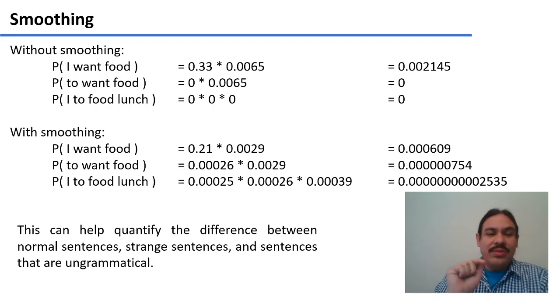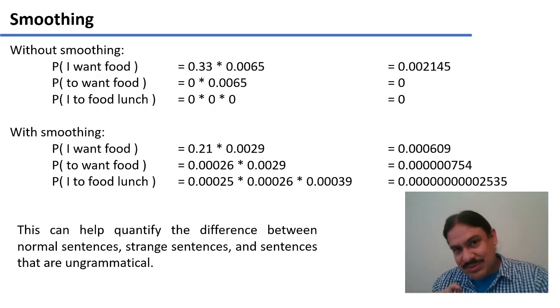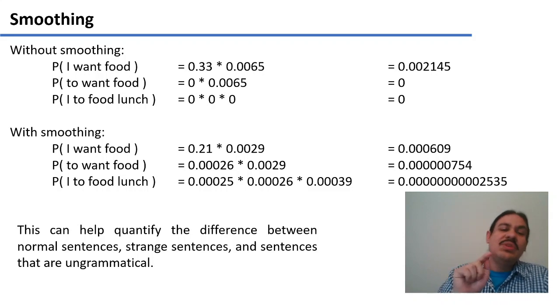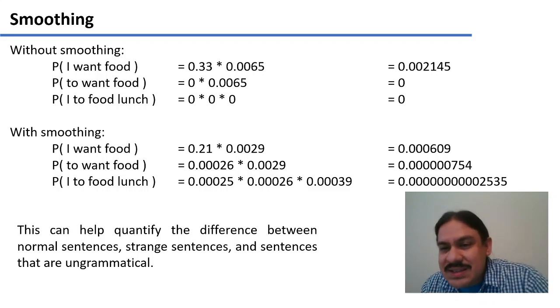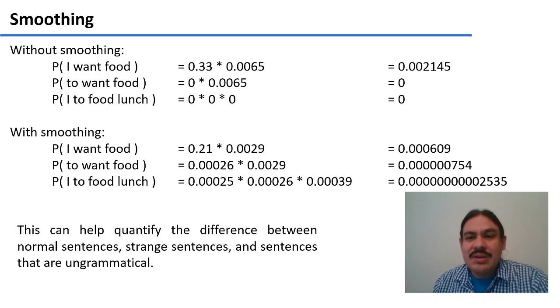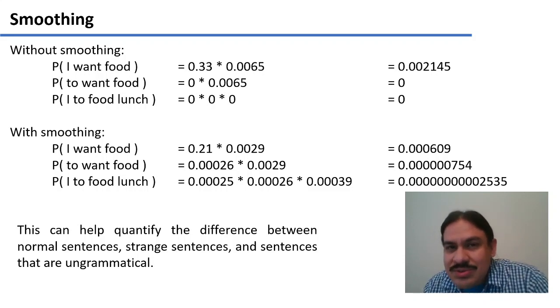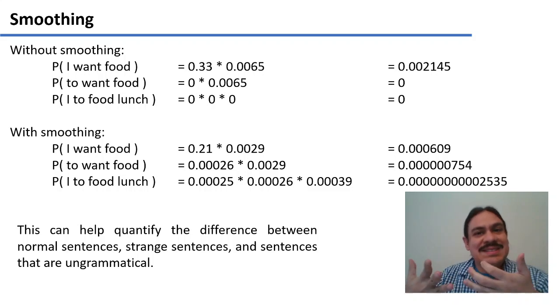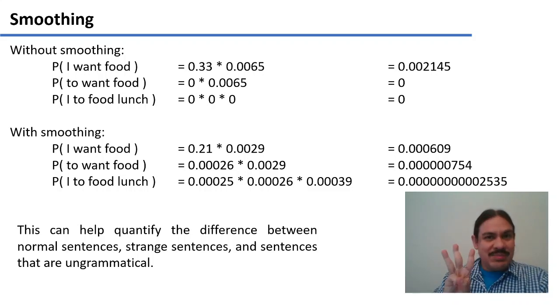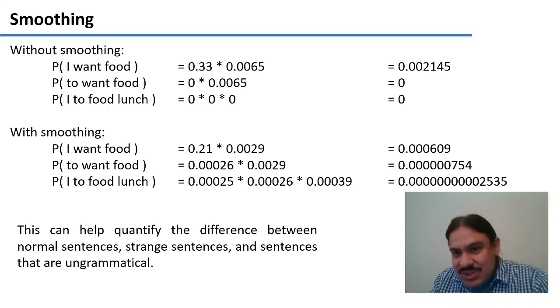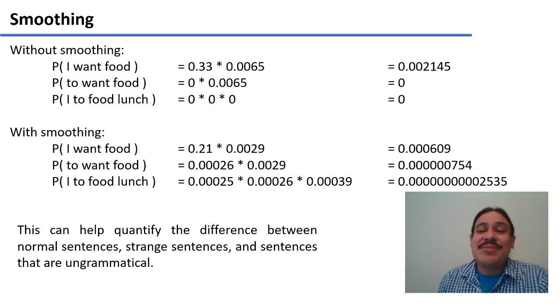So with the smooth probabilities, you have, I want food. It's 0.000609. You have to want food, which is the multiplication of the new probabilities. It's something that is three orders of magnitude smaller. 0.000000754. But it is a probability that exists. The third type of sentence, the one that is ungrammatical, has that multiplication. And it is a lot of zeros. 2535.